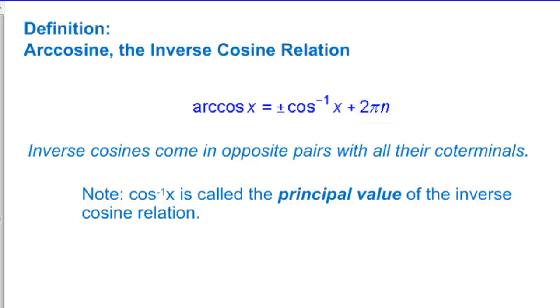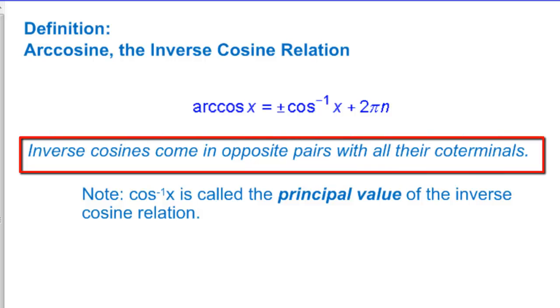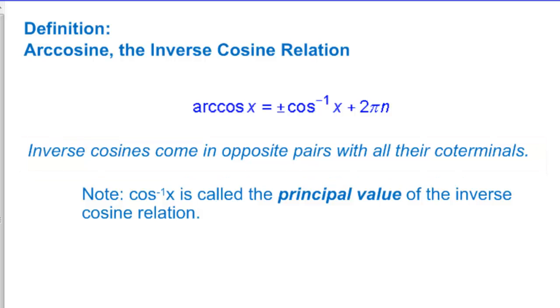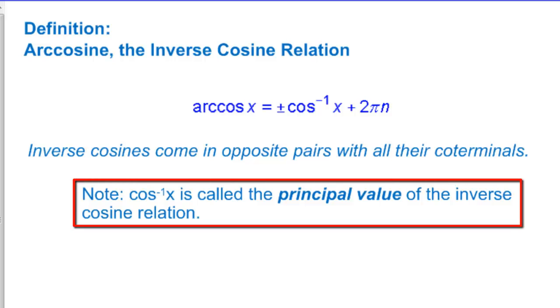Note that for the arc cosine, all our answers will come in opposite pairs, plus their coterminal angles. That initial value that we get off the principal branch is called the principal value.